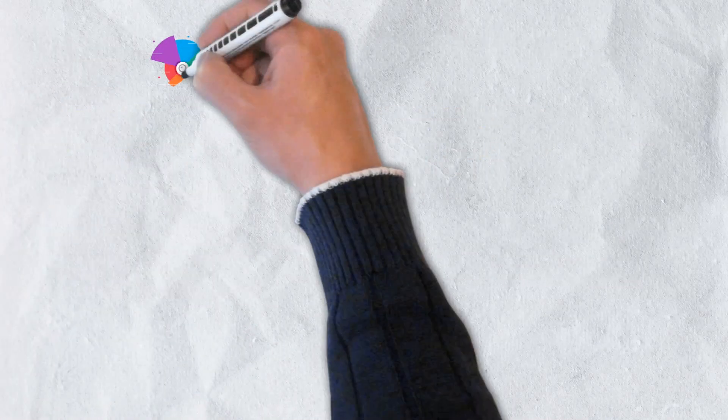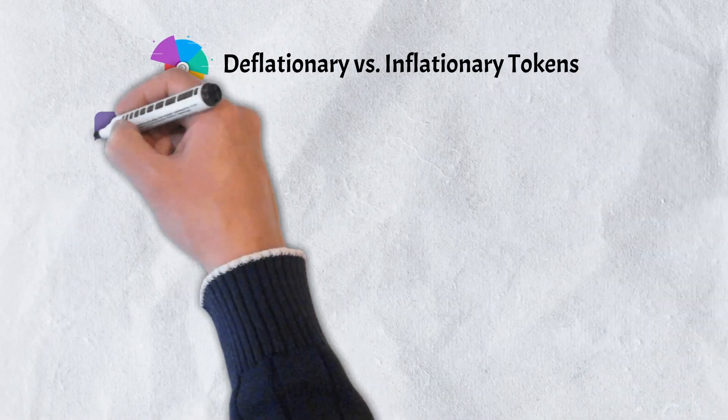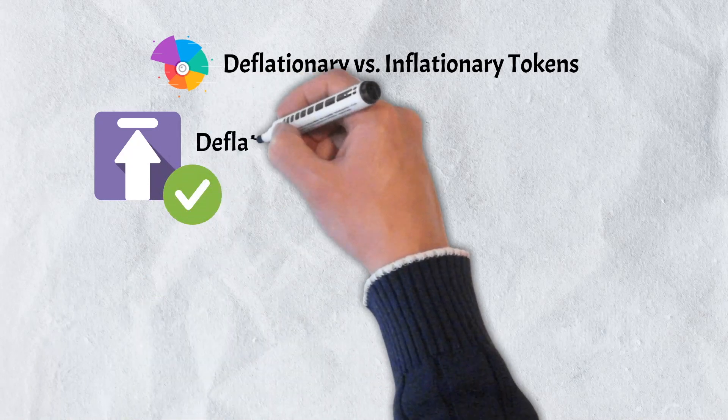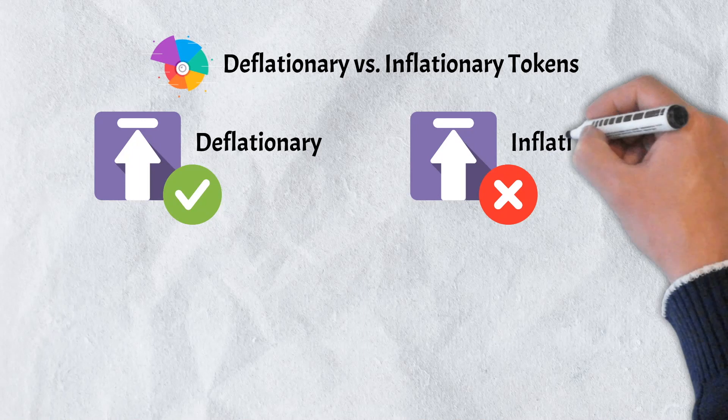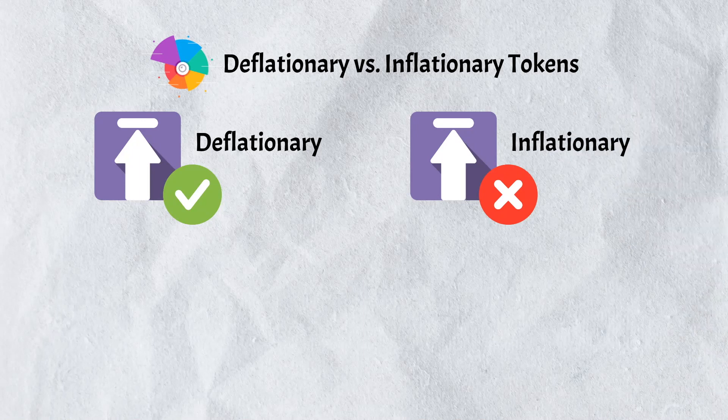Number 2: Deflationary vs. Inflationary Tokens. If a token has a maximum supply, it is considered to be deflationary. If it doesn't however, it is considered to be the opposite, or inflationary.